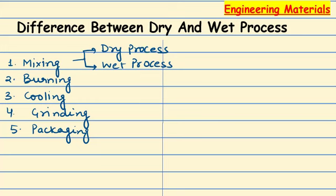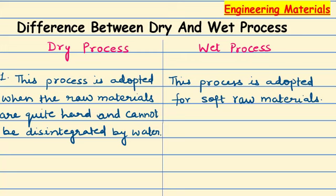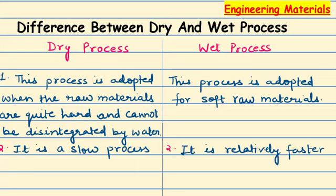The wet process is a slow process, whereas the dry process is a fast process. In the case of the dry process, fuel consumption is very low. In the wet process, the excess amount of water will evaporate, so the fuel consumption will be higher.